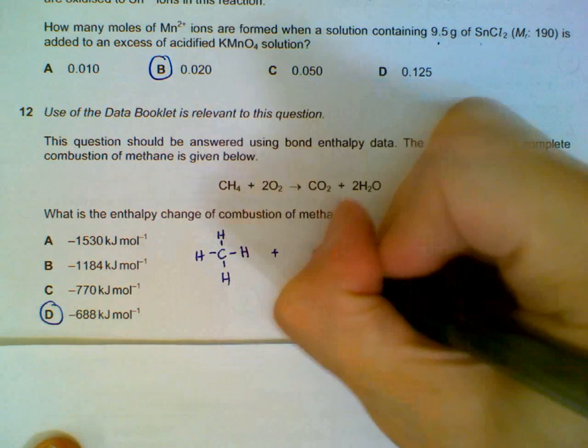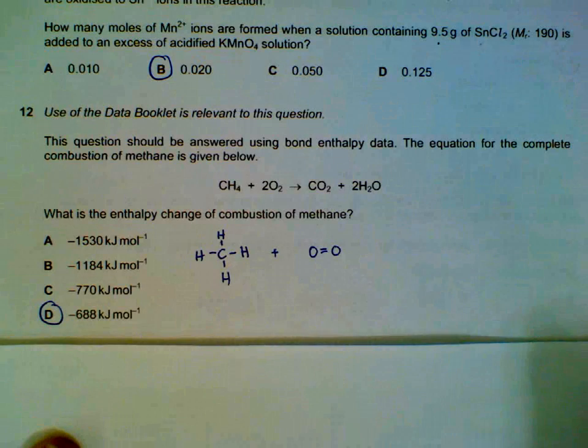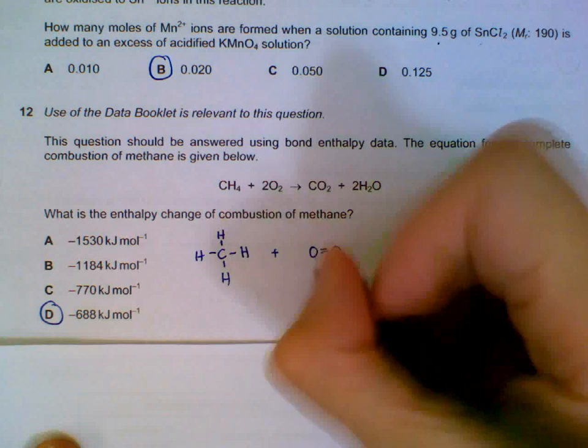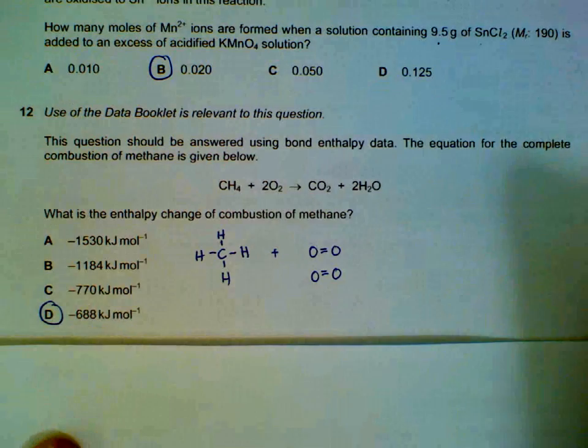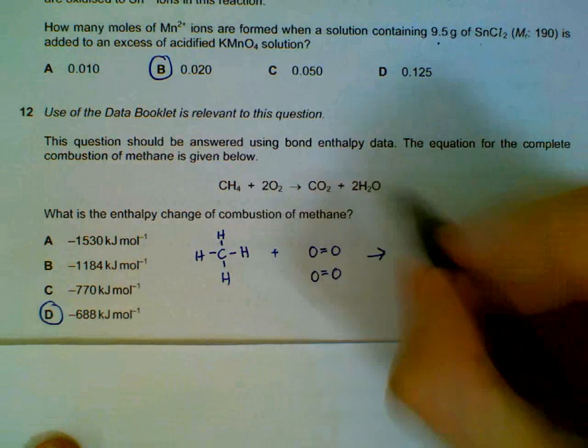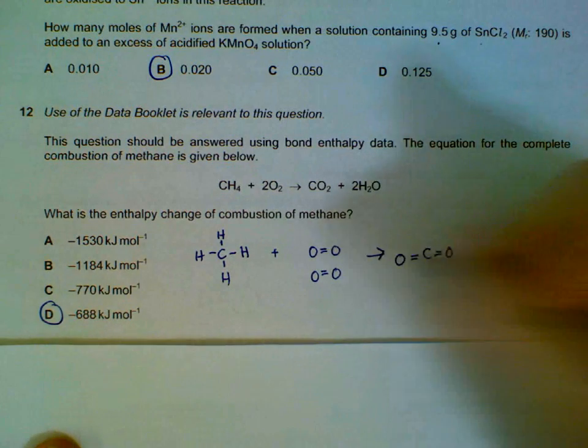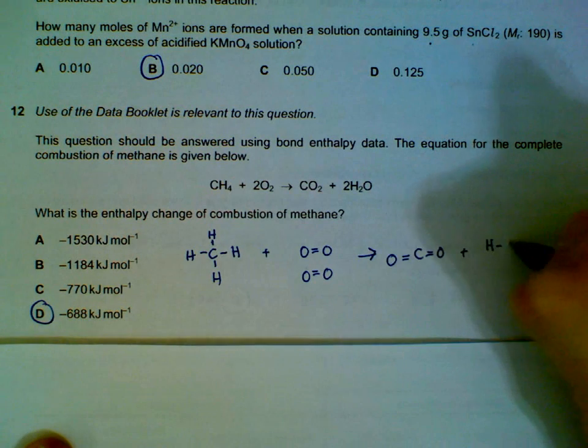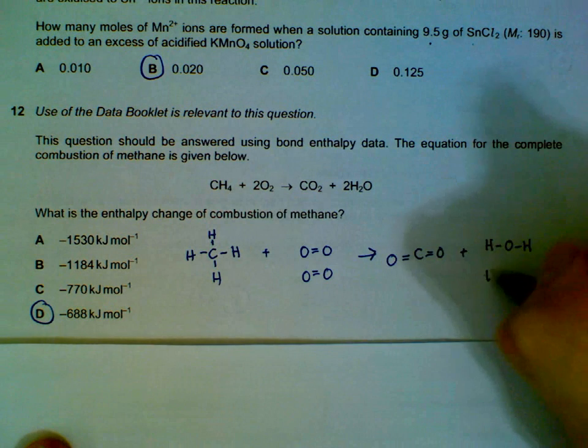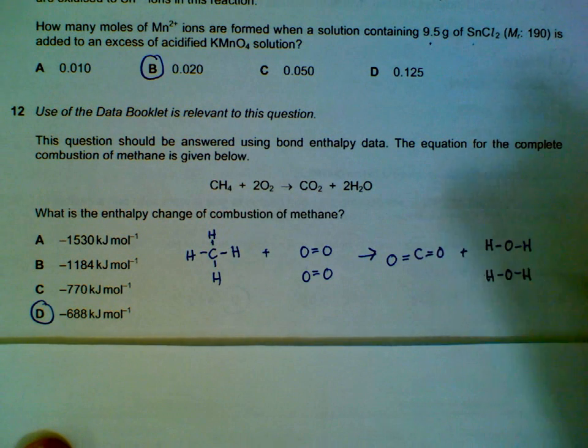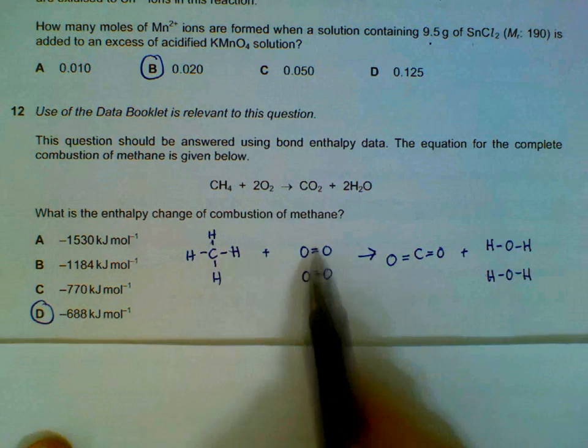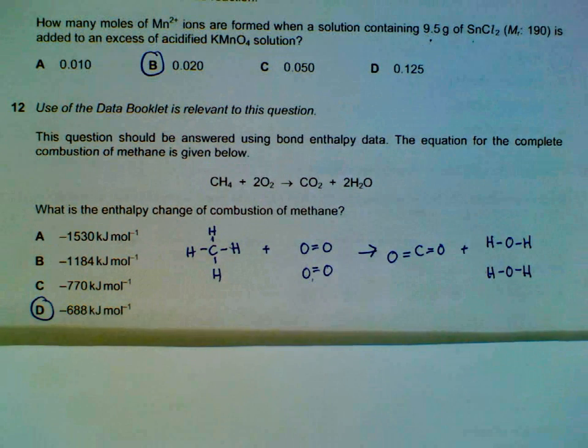...is to draw the bond energies of the common molecules. Methane, single bonds. Oxygen is a double bond O₂, there are 2 of them. And then it creates carbon dioxide, we have 2 double bonds. And then we have water, 2 molecules of water, single bond H₂O. Since there are 2 molecules we will have this. Once we have this, it's easy to visualize what are the types of bonds broken and what are the types of bonds formed.